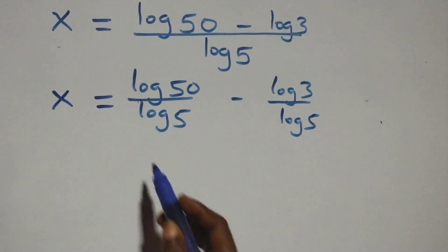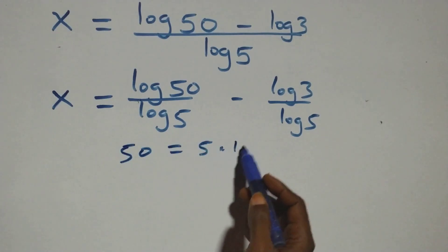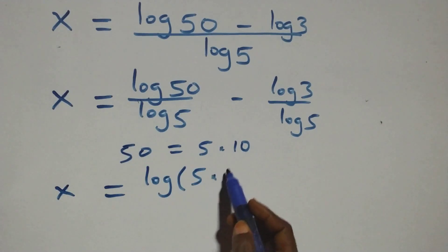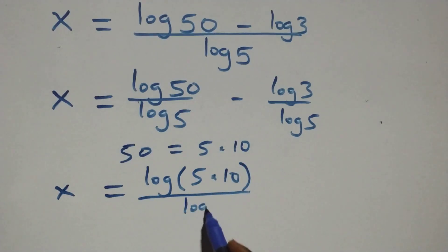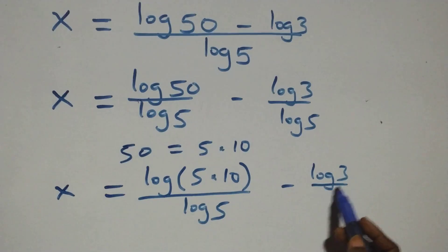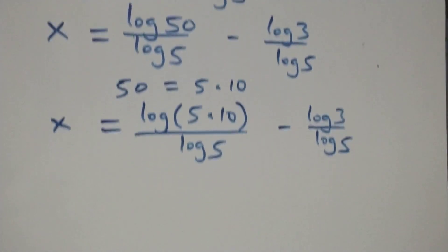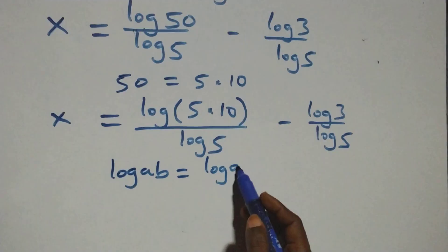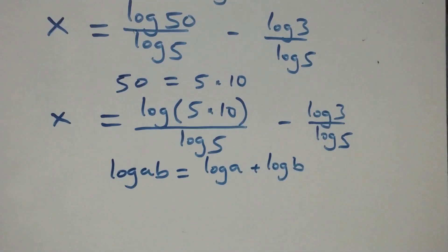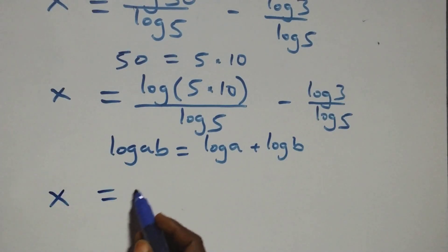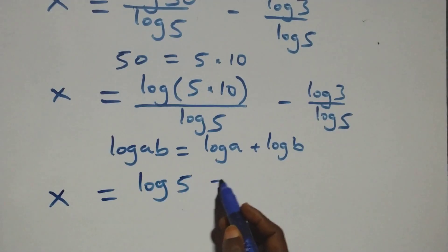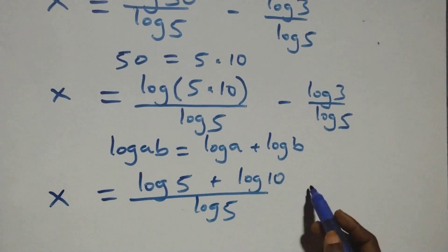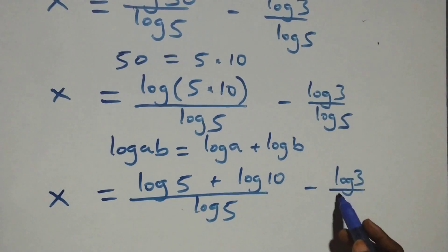We can write 50 as 5 times 10, so x equals log(5 times 10) over log 5 minus log 3 over log 5. Applying the product rule of logarithms — log(a times b) equals log a plus log b — this becomes x equals (log 5 plus log 10) over log 5 minus log 3 over log 5.